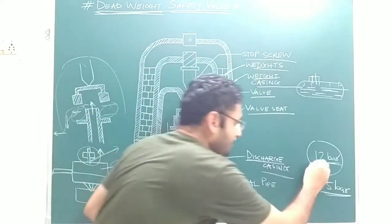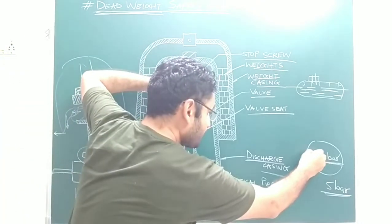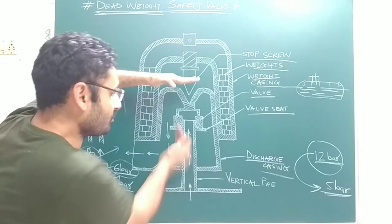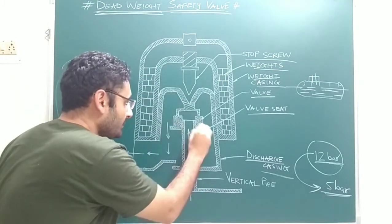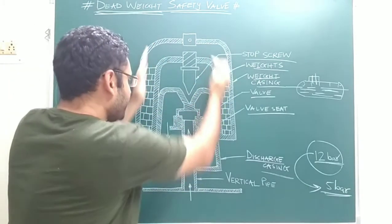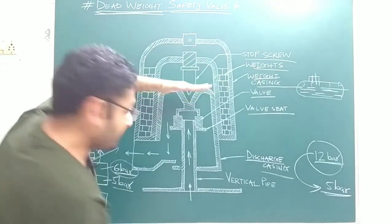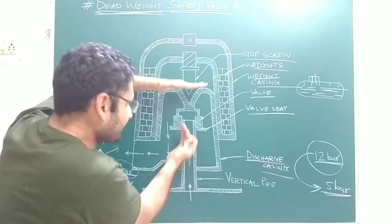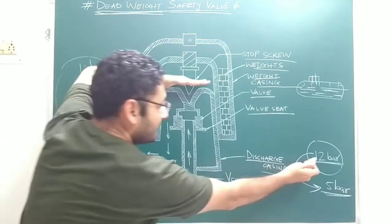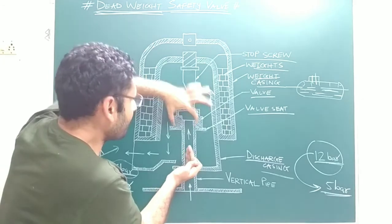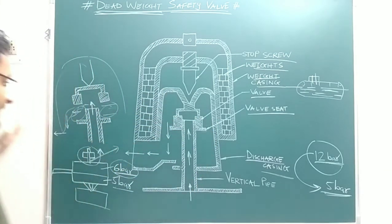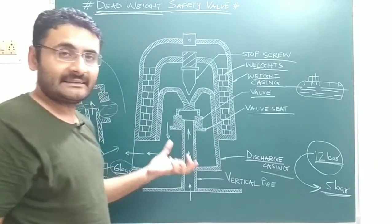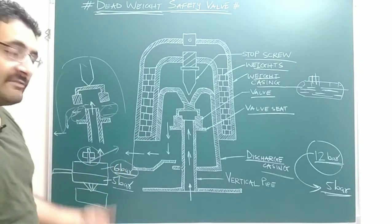When the pressure decreases from 12 bar down to the working pressure of 5 bar, both valves move in the downward direction and rest on the valve seat. The dead weight balances the working pressure of the steam. When the pressure again exceeds the working pressure — from 5 bar back up to 12 bar — both valves are again lifted, a gap is created, and the extra pressurized steam is rejected into the atmosphere through the discharge casing. That is how this dead weight safety valve provides safety to the boiler.